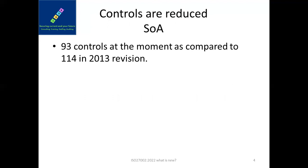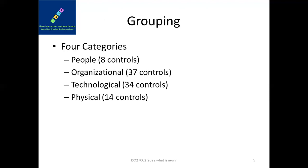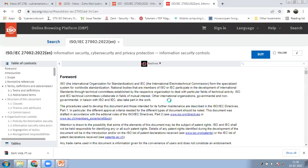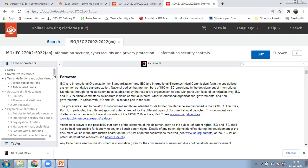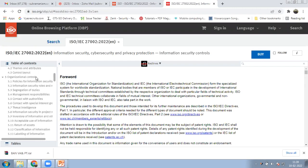What has changed in ISO 27002 from the previous 2013 version? We had 114 controls in 2013, but it has come down to 93. In fact, the 2005 version had even more — close to 134 controls. Then in 2013 it was brought down to 114, and now it's 93. The controls have been grouped under four categories: organization controls, people controls, physical controls, and technological controls.